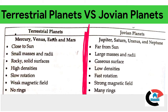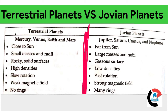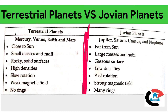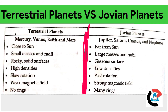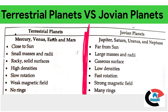Terrestrial planets have rocky and solid surfaces, while jovian planets have gaseous surfaces. Terrestrial planets have high densities and jovian planets have low densities. Terrestrial planets have slow rotation and jovian planets have fast rotation. Terrestrial planets are weak in magnetic field and jovian planets have strong magnetic field. There are no rings in terrestrial planets, and jovian planets have many rings.